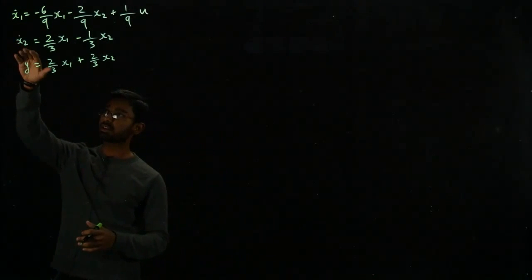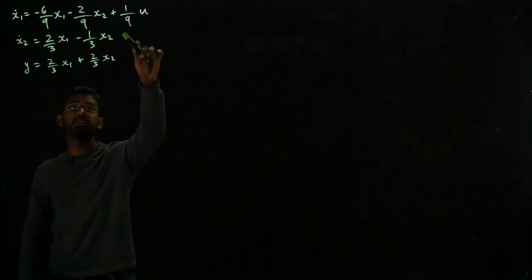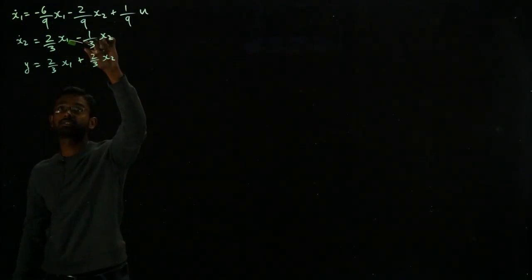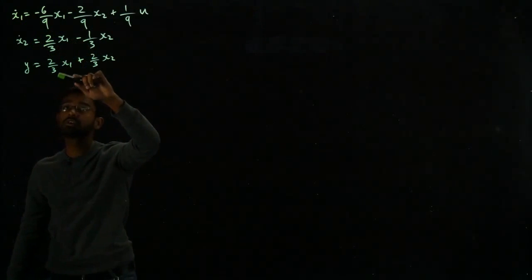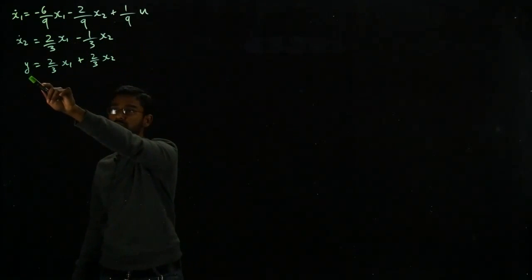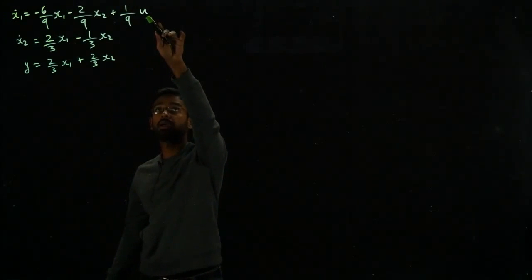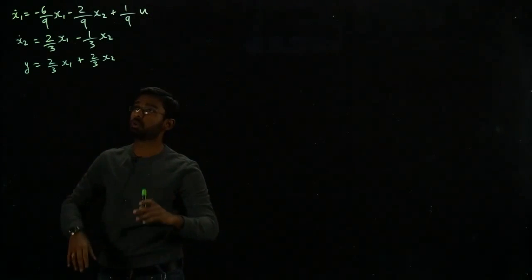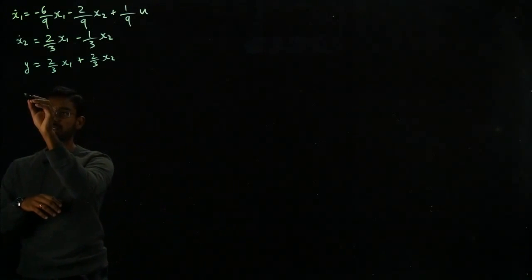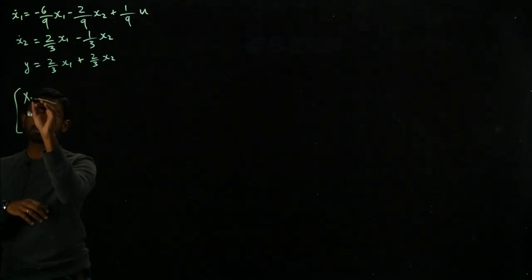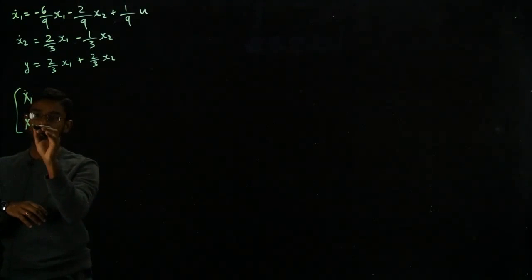We are given a set of state space equations here. These are my two states x₁ and x₂ and these are the state derivatives. I have an output equation which is y and my input is u. So now the very next thing we have to do is write the state space representation in matrix form.